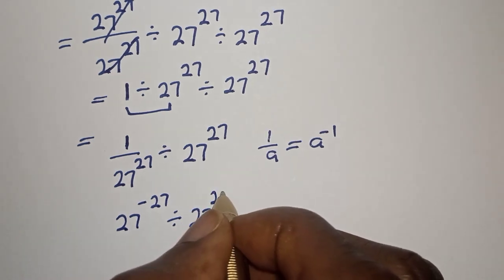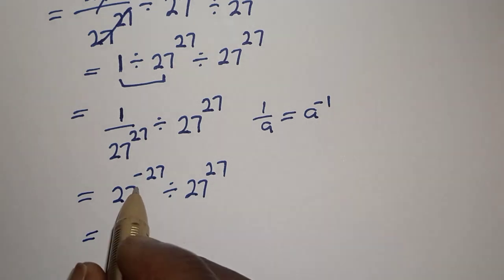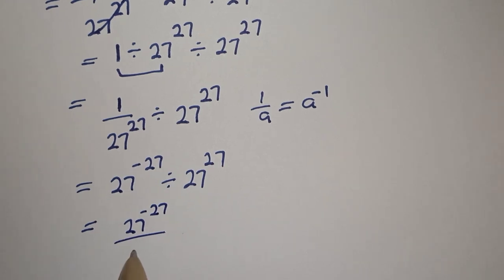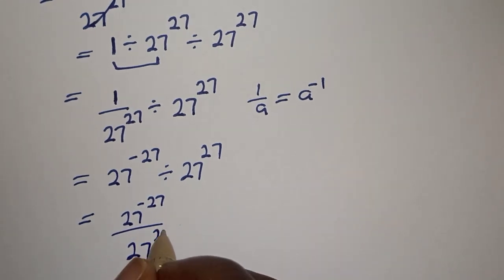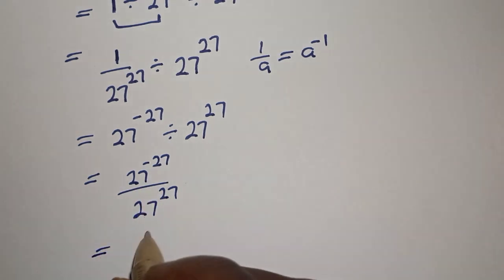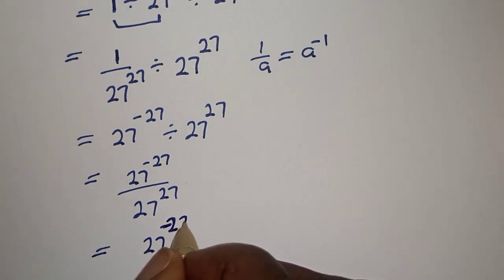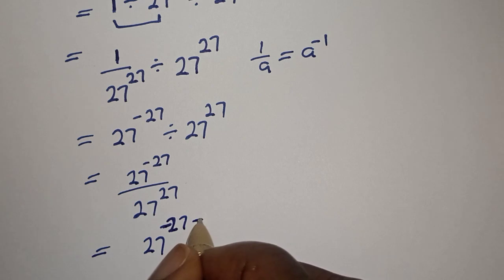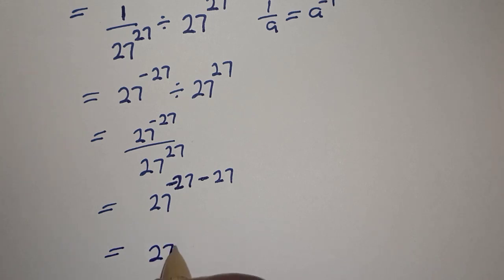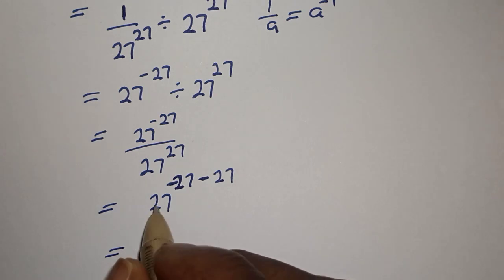Then 1 over 27 raised to power 27 over 27 raised to power 27. The same thing: 1 over a equals a raised to power minus 1, so we get 27 raised to power minus 27 minus 27, that is minus 54.